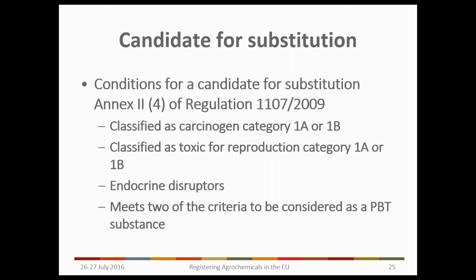The conditions for qualifying as a candidate for substitution are detailed in Annex 2 of Regulation 1107/2009. If classified as carcinogenic, toxic to reproduction, or an endocrine disruptor, you will be a candidate for substitution. Note that where negligible exposure allowed approval under the cut-off criteria, that substance would still trigger candidate for substitution status. Also, if you meet two out of the three criteria to be considered a PBT — persistent, bioaccumulative, and toxic — you will again qualify as a candidate for substitution.